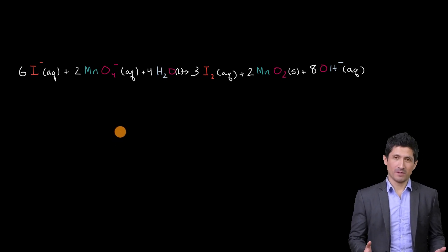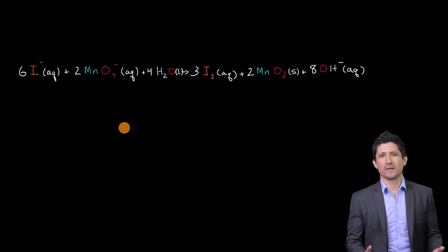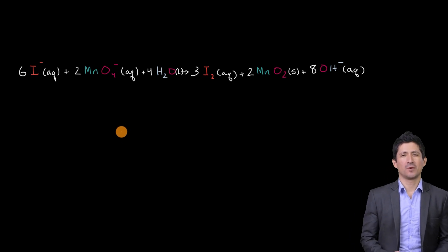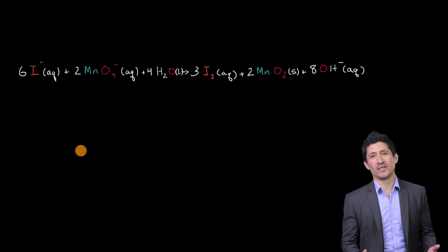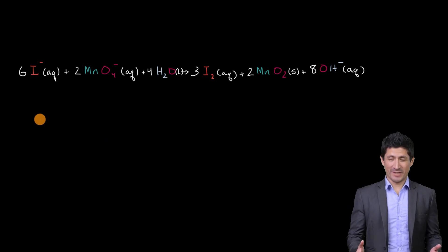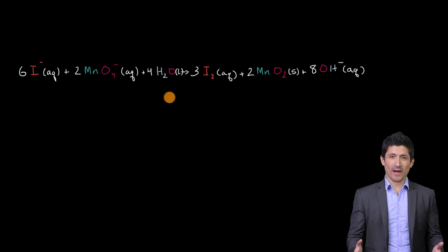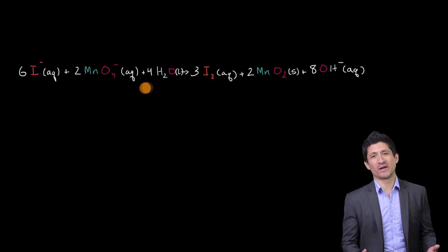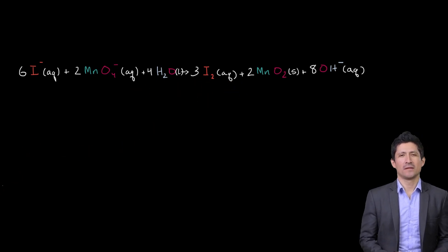All right, now let's work through it together. The way I suggest you tackle it is to figure out the oxidation numbers for each of the elements as we go into the reaction — as they are entering the reaction and as they are exiting the reaction, or on either side of the reaction.